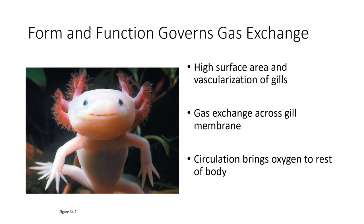In this axolotl, which is an aquatic organism, we can see the high surface area and the very red coloration of these external gills. Gas exchange is occurring across the gill membrane, with carbon dioxide being lost to the environment and oxygen being taken up. The circulation — all that blood there — is going to be bringing the oxygen to the rest of the body. It is notable that these are gills, they are external, and this is an amphibian.